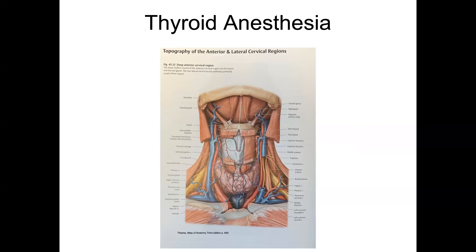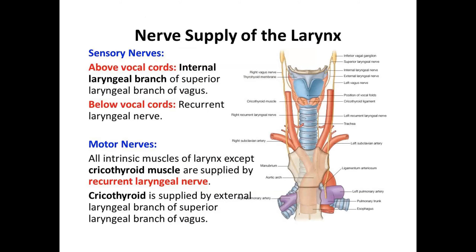One of the most common things we deal with is the thyroid. Generally it weighs about 20 grams. It has two lobes and an isthmus, and it's attached to the lateral aspects of the trachea, which is where it gets to be problematic because we deal with a lot of blood supply there. You also have a pretty significant nervous supply to worry about — this is one of those common test questions. If you can't remember anything, remember the internal laryngeal branch and the recurrent laryngeal nerve.